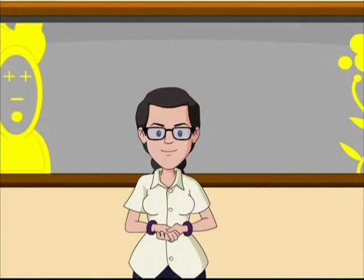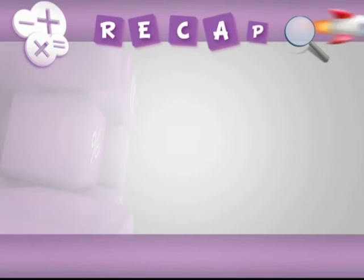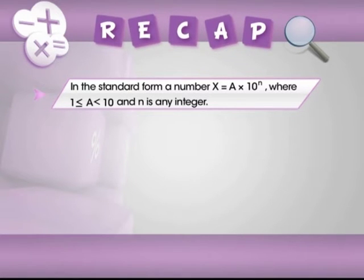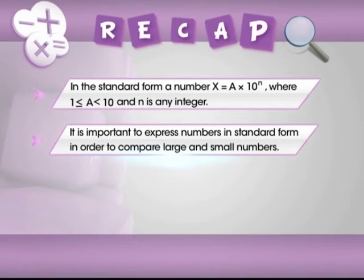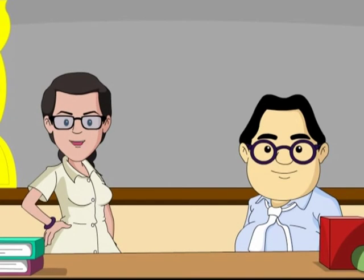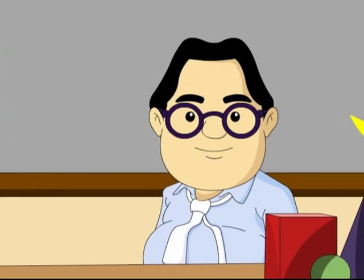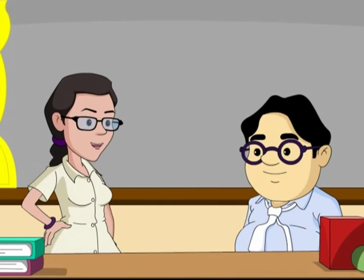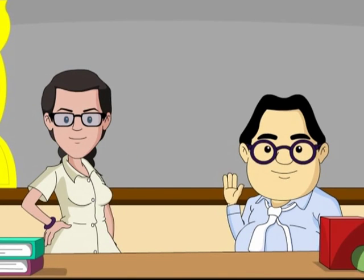Let's recap what we discussed today. In standard form, a number x is written as a into 10 raised to power n, where a is a real number between 1 and 10 — including 1 but excluding 10 — and n is any integer: positive for large numbers and negative for small numbers. It's important to express numbers in standard form in order to compare large and small numbers easily. That's all for today — hope you enjoyed it as much as we did! Goodbye!